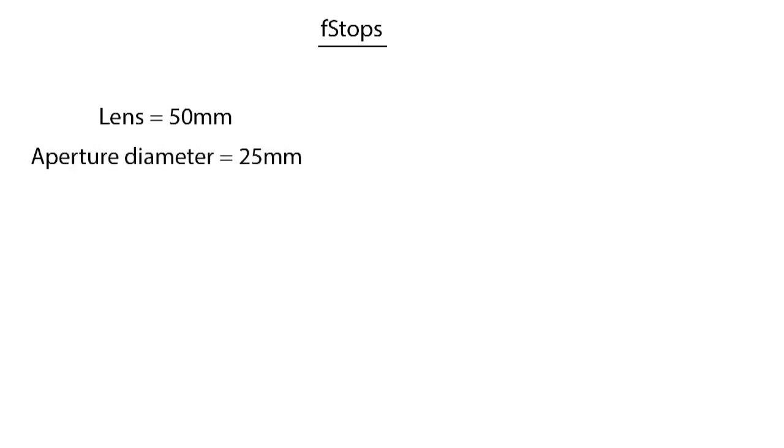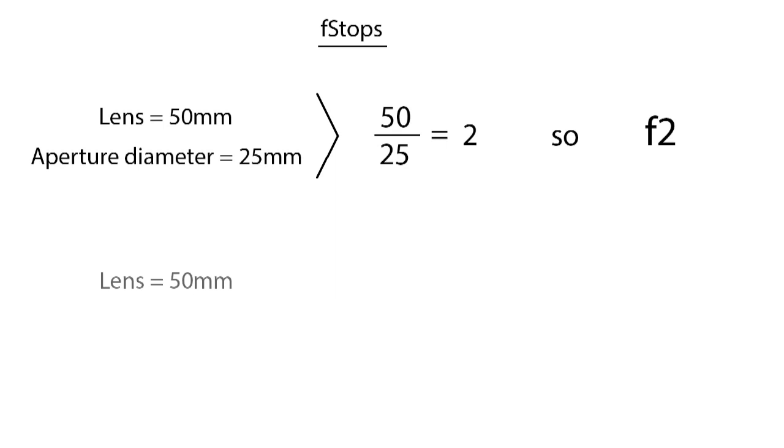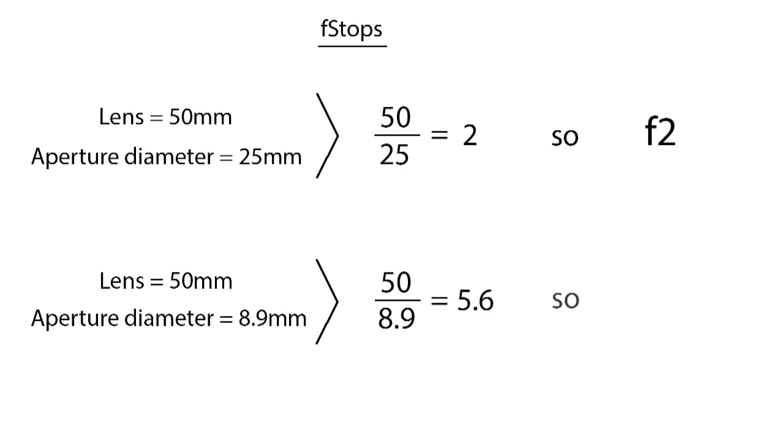Adding to the confusion is the somewhat arbitrary appearance of the relationship between the numbers. The reason for this is that an f-number is actually the expression of the ratio between the focal length of the lens and the diameter of the aperture. For example, if the diameter of the aperture on a 50mm lens is 25mm, the ratio is 50 over 25, which equals 2 — so f2. For the same lens, if the diameter of the aperture is 8.9mm, the ratio is 50 over 8.9, which equals 5.6 — so f5.6. These particular values were arrived at because each change in the diameter of the aperture per f-stop causes a doubling or halving of the amount of light entering the camera. So these numbers simply arose out of the physics, and unfortunately the math just didn't lead to a simpler set of numbers.